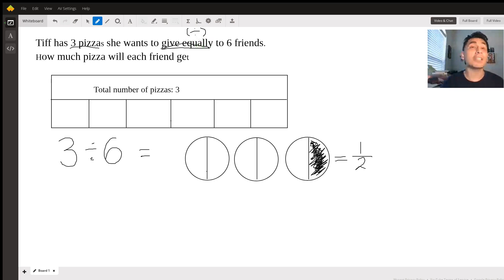In fact, it says again in here, how much pizza will each friend get. The word 'each' has two meanings. The first one is multiplication, and the other one is division. Since we have the word 'give equally' first, we already know that we need to divide.